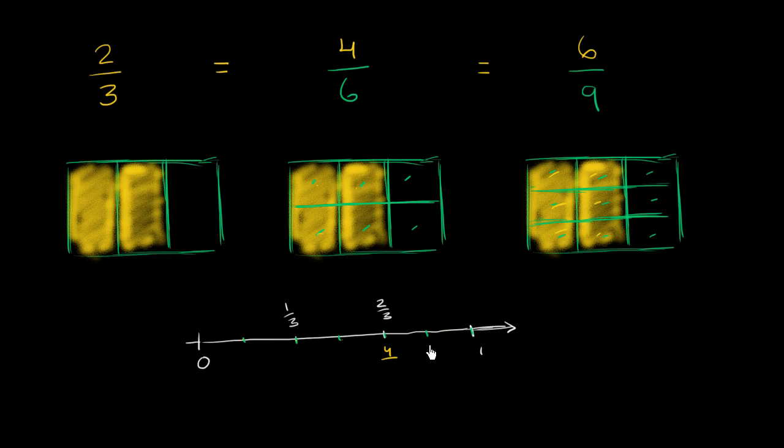And you could do the same thing if you wanted to think about ninths. So instead of dividing each of, so what we could do, we could put 1, 2, 3, 4, 5, 6, 7, 8, 9. Now I've split this part of our number line between zero and one into nine equal spaces. Well what would 6 ninths be? Well, 1, 2, 3, 4, 5, 6. Once again, the exact same point of the number line. It's an equivalent fraction. 6 ninths is equal to 2 thirds is equal to 4 sixths.